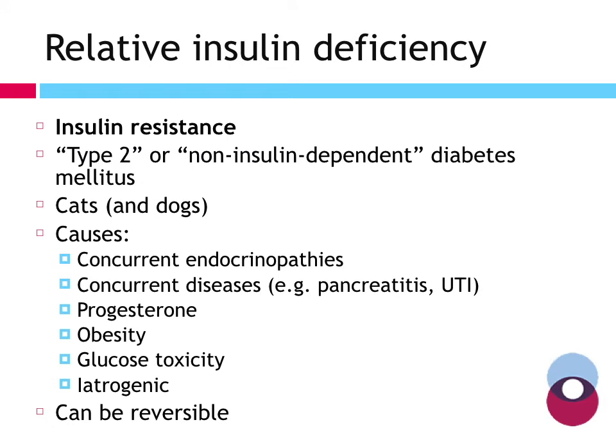Relative insulin deficiency is insulin resistance, where we're generally producing insulin but it's not having its desired effect. This is analogous to type 2 or non-insulin dependent diabetes in humans — though a slightly confusing term for our patients, because cats do tend to mainly have this insulin resistance but we still treat them with insulin. In dogs, insulin resistance is also very important, but it's often overlaid on top of an absolute reduction in insulin production.